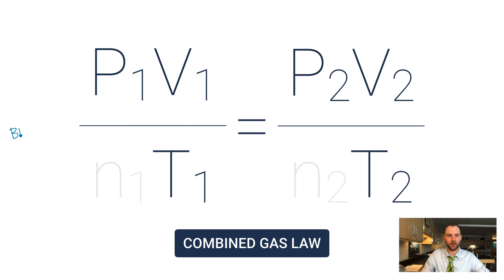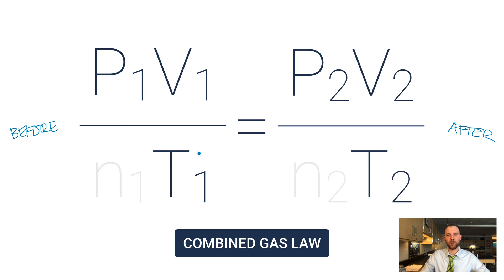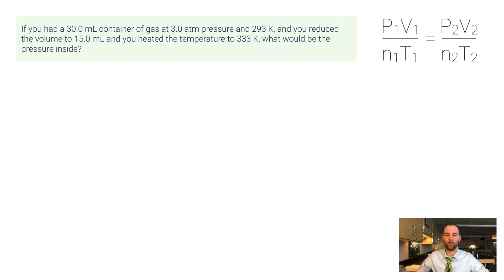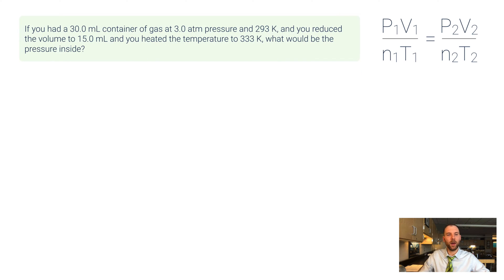The ones and twos don't play a role in the math — think of the left side as the 'before' situation and the right side as the 'after' situation. Usually what we're given is information about all these variables except for just one, and we're meant to figure out what happened to that pressure, volume, temperature, or amount of moles.